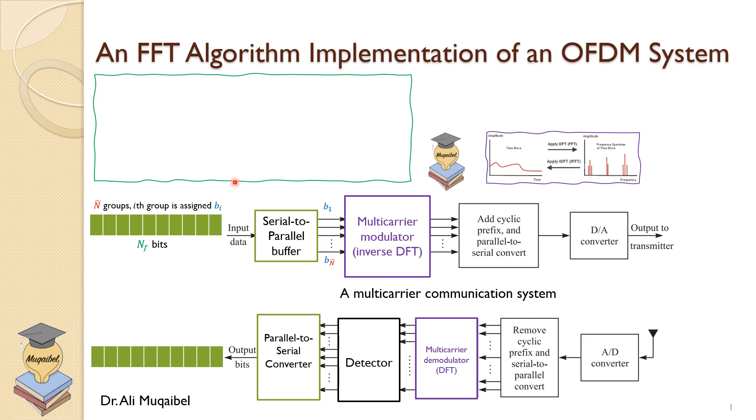The serial-to-parallel buffer—note the color match here—the block in green is described in green. A serial-to-parallel buffer segments the information sequence N_F, where N-tilde is the number of groups and b_i is the number of bits.